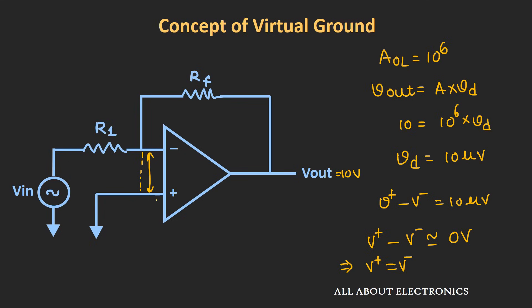The term 'virtual' means these two terminals are not actually short-circuited but are virtually short-circuited — whatever voltage appears at one terminal, the exact same voltage appears at the other. In this inverting configuration, the non-inverting input terminal is grounded, so V+ equals 0. According to this conclusion, V− should also equal 0. This terminal is not actually grounded, but it will act as a virtual ground. The negative feedback ensures the difference between the inverting and non-inverting terminals is negligible, so we can consider both at the same potential. This is known as the virtual ground concept.